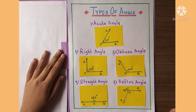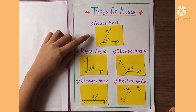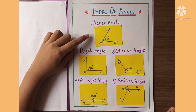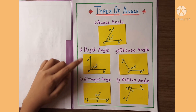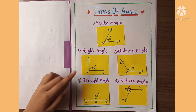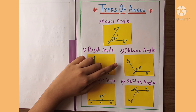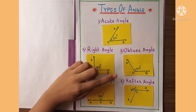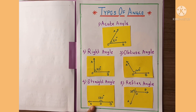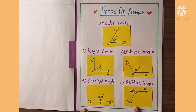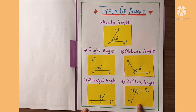Here are the types of angles. First, acute angle — an angle less than 90 degrees is called an acute angle. Right angle — an angle of 90 degrees is called a right angle. Obtuse angle — an angle more than 90 degrees and less than 180 degrees is called an obtuse angle. Straight angle — an angle of 180 degrees is called a straight angle. Reflex angle — an angle more than 180 degrees and less than 360 degrees is called a reflex angle.